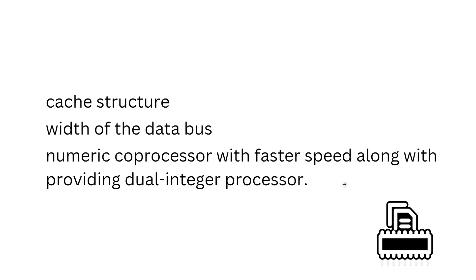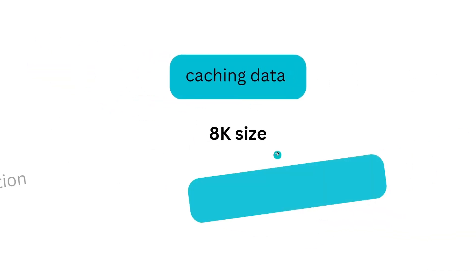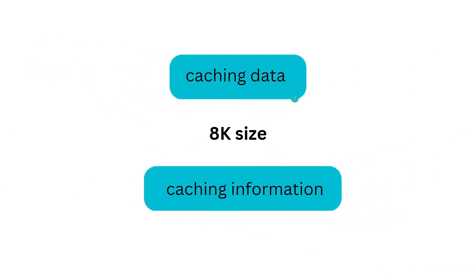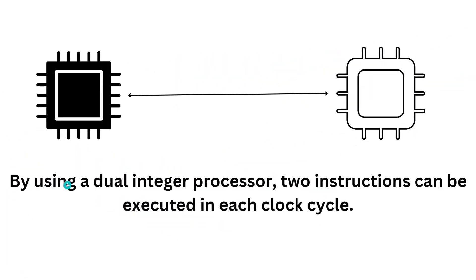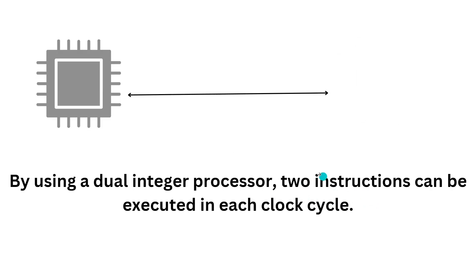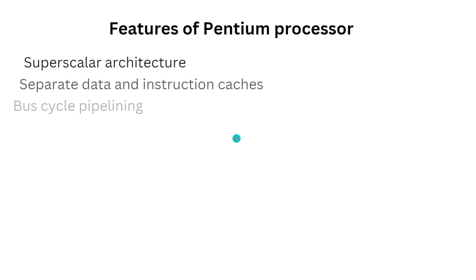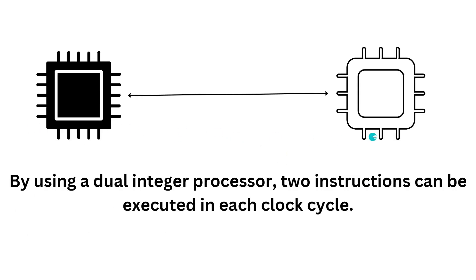In the Pentium processor there are two caches — one for caching data and another for caching instructions, and each one is of 8K size. By using a dual integer processor, two instructions can be executed in each clock cycle. The data bus width in Pentium is 64-bit, which was 32-bit in 80386, and the numeric coprocessor exhibits quite a faster speed than that of 80486.